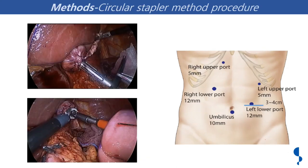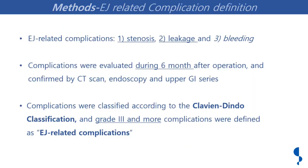By contrast, the circular method: purse-string suture is applied first and put into the stump, purse-string is tightened, and CDH is inserted. For CDH insertion, extension of 3 to 4 centimeters of cord is needed, which results in muscle spillage. We evaluated complications within 6 months after operation. EGD and intraoperative diagnosis were counted. Complication cases were counted according to the Clavien-Dindo classification. Over grade 3, requiring surgical, endoscopic, or radiological intervention, were defined as EJ-related complications.